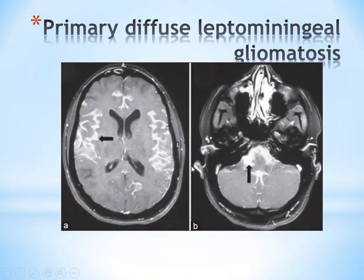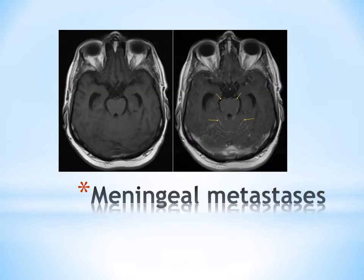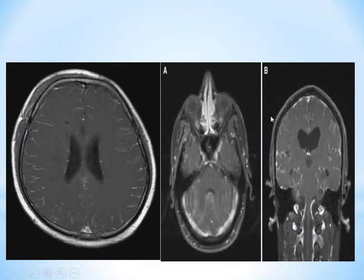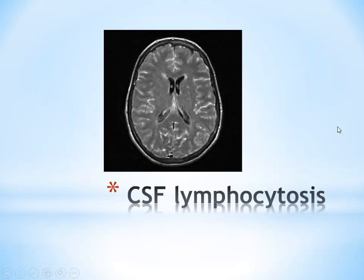On the T1-weighted post-contrast images, the leptomeninges are markedly enhanced and they extend deep into the sulci of the brain, confirming pia-arachnoid involvement. Another case shows leptomeningeal enhancement in a case of meningeal metastasis. Another case of leptomeningeal enhancement, and here also a case of CSF lymphocytosis showing leptomeningeal enhancement. The images are T1-weighted post-contrast, not T2 or FLAIR.